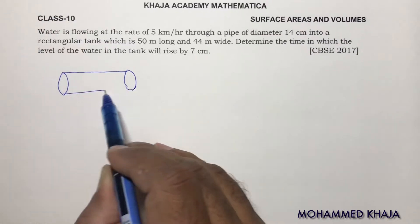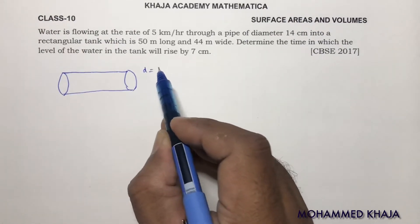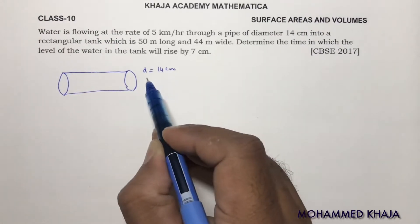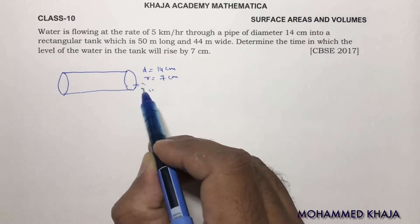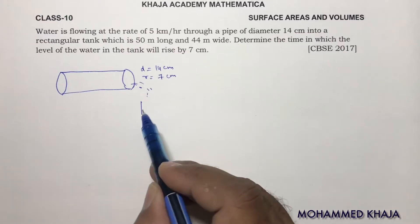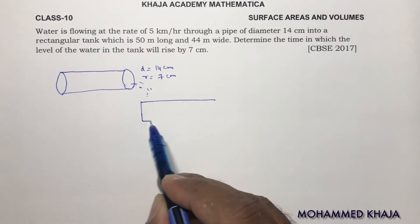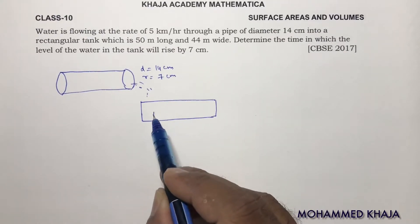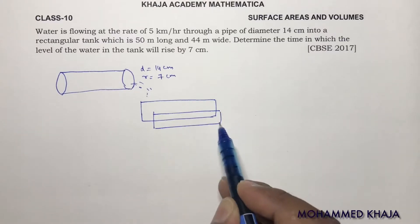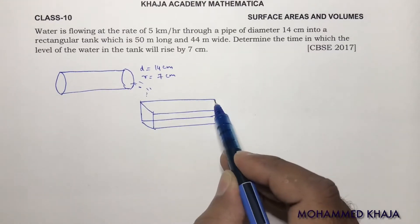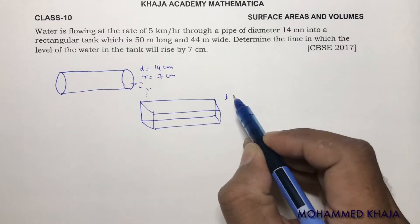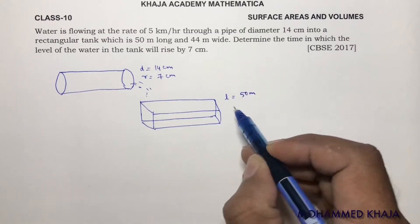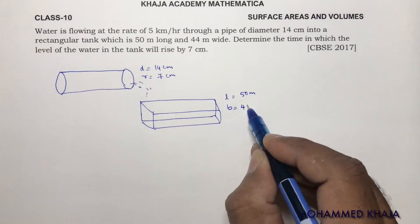They mention diameter, so here the diameter is 14 cm, so radius is 7 cm. From this, the water is flowing into a rectangular tank. Rectangular tank is nothing but here I will take a cuboid. In the cuboid they give the length. Length is 50 meters. Breadth is 44 meters.